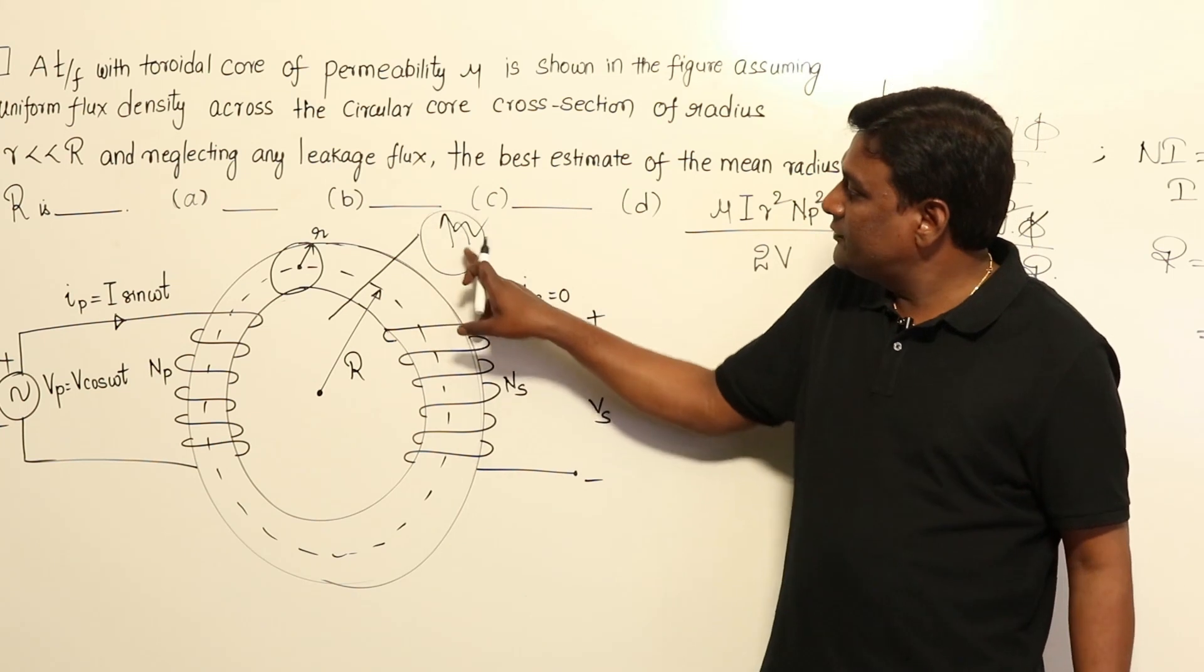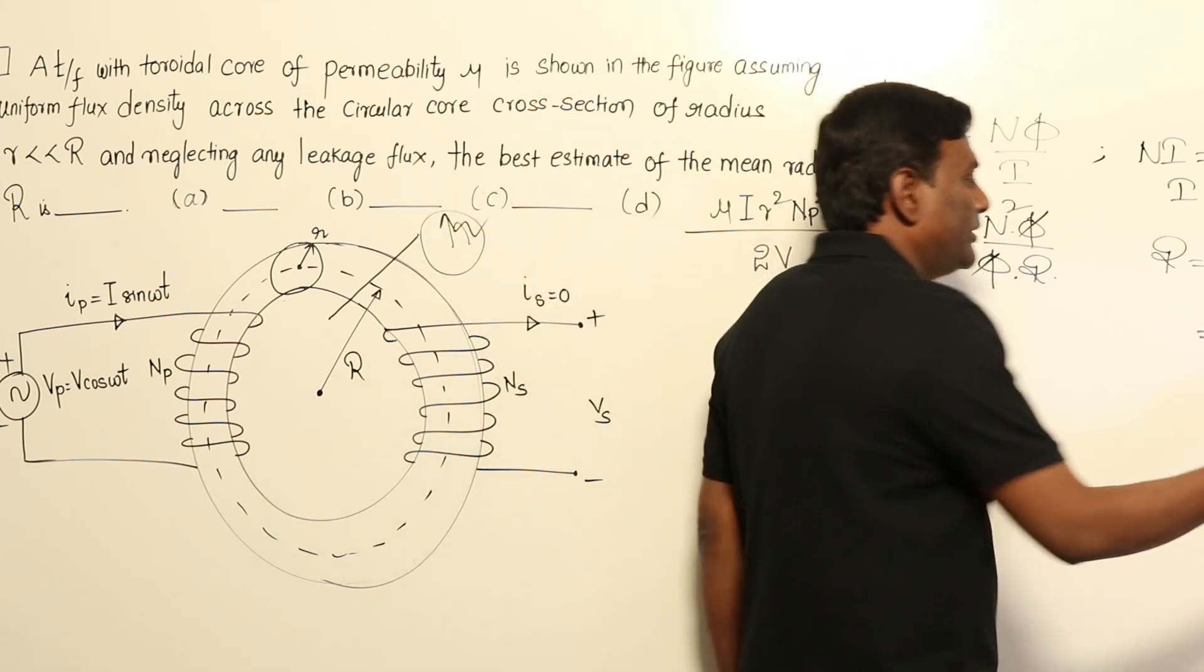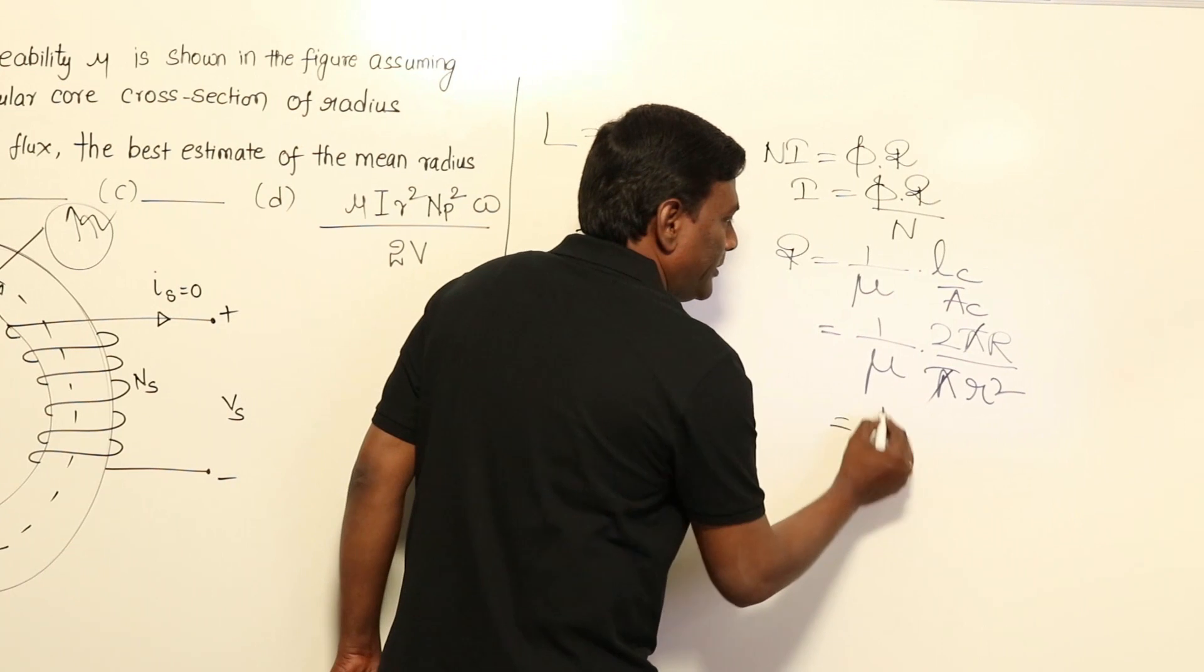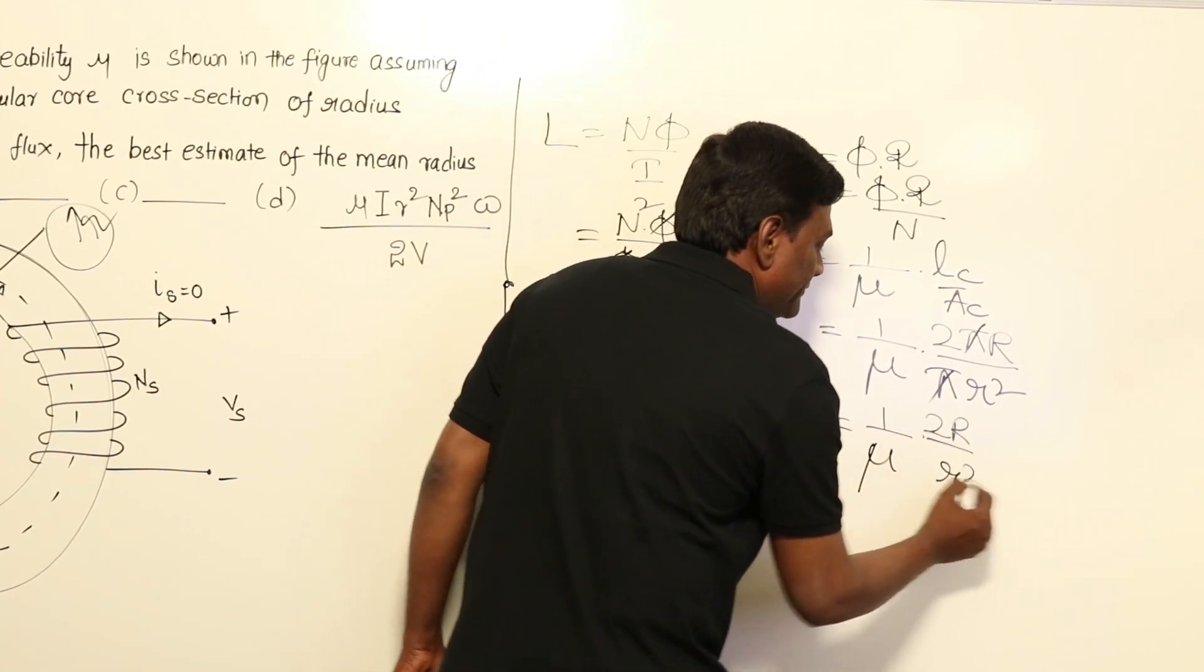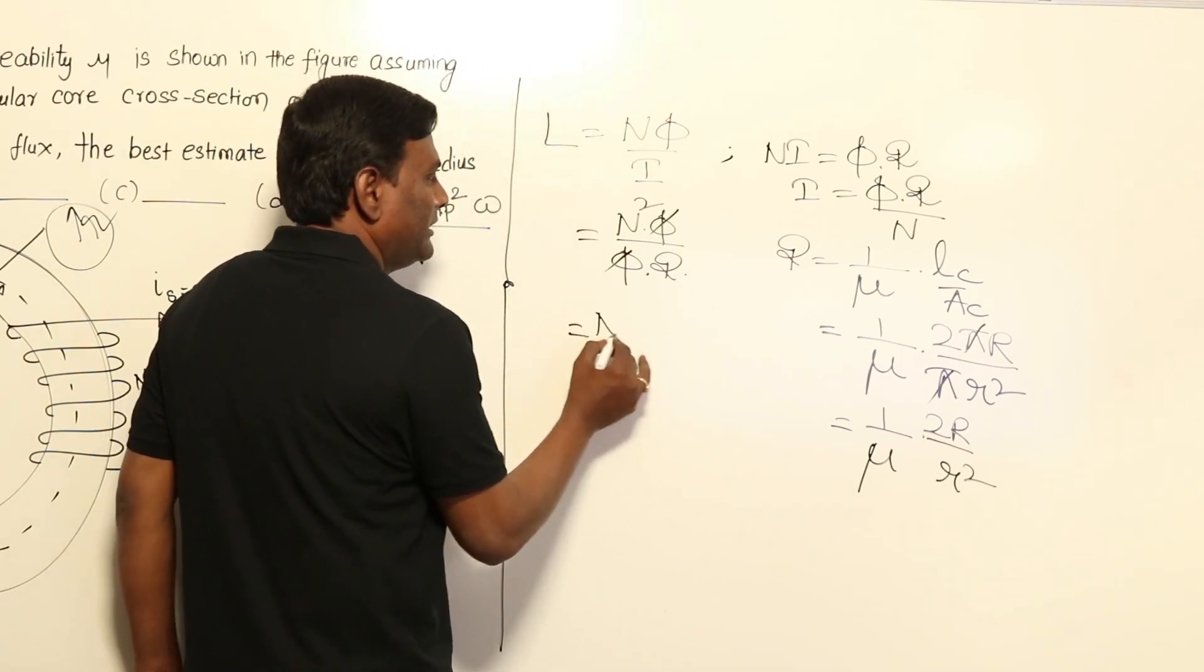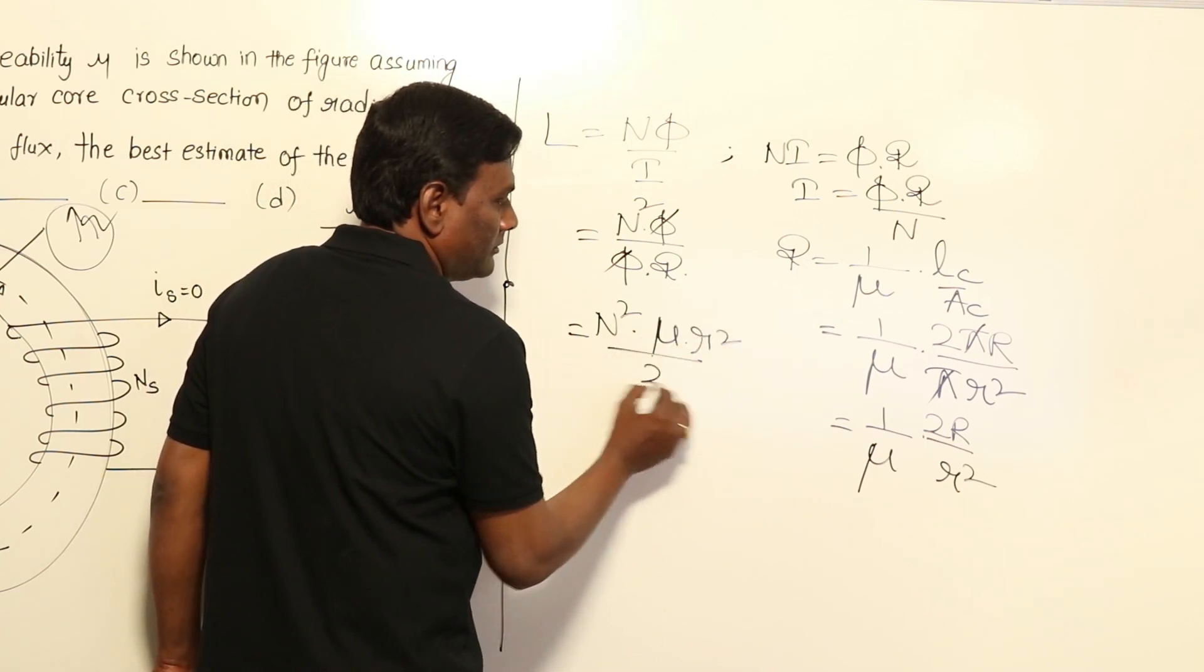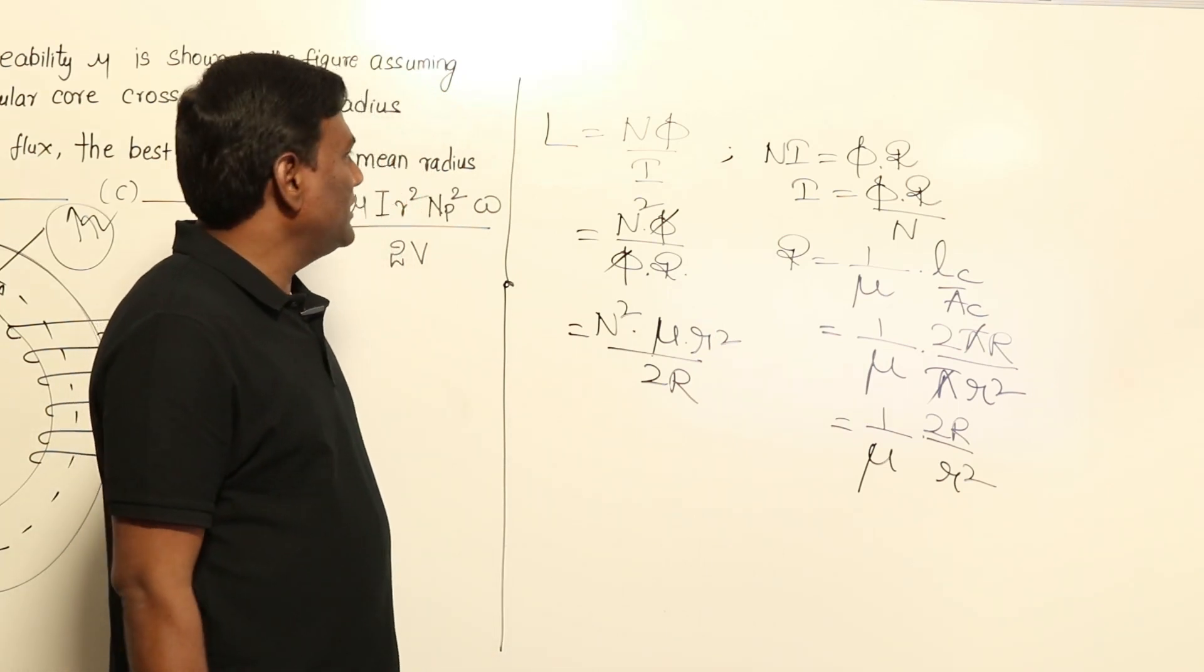If radius is r, the area of cross-section is πr². So reluctance becomes 1/μ × 2R_m/r². Substituting this back, L = N² divided by reluctance = N² × μ × r²/(2R_m).